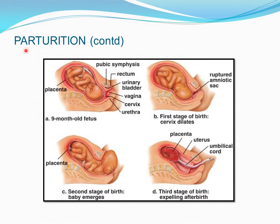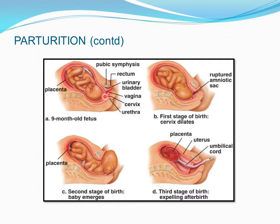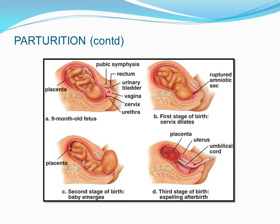Now looking at the diagram of parturition: this is the 9-month-old fetus in a head-down position, with the head near the cervix, which is at the top of the vagina. You can see the head has come near the opening, and the cervix must open to allow the head to pass through the vagina.